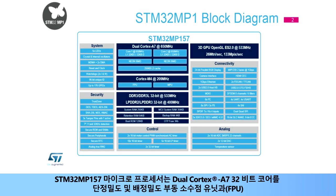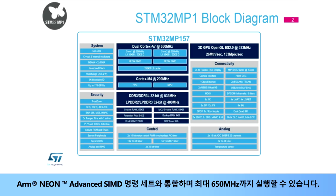The STM32 MP157 microprocessor integrates dual Cortex-A7 32-bit cores with single and double-precision floating-point units, plus the ARM Neon Advanced SIMD instruction set, and can run at up to 650 MHz.